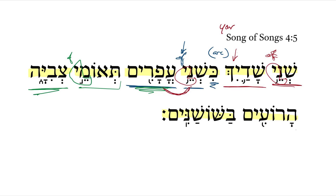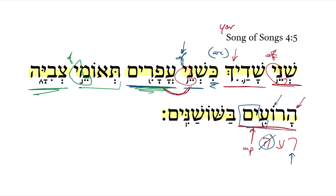Next we get 'the ones grazing.' Notice we have a masculine plural ending here. The verbal root is ra'a, to graze or to pasture. We get the definite article at the front on 'haroim.' Notice we have the 'o' vowel right after that first root letter for participles. And as a third-hey verb, we take the masculine plural ending and put it directly onto the second root letter. That's how that verb is formed — a qal participle masculine plural: 'the ones grazing.'